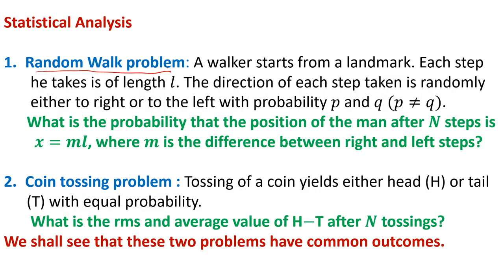This statistical analysis will mainly be done on two problems: the random walk problem and the coin tossing problem. The random walker — assumably a drunken man — starts from a landmark on the road and places a step to the right or left with distinct probabilities p and q respectively. Each step is statistically independent and of equal length L.